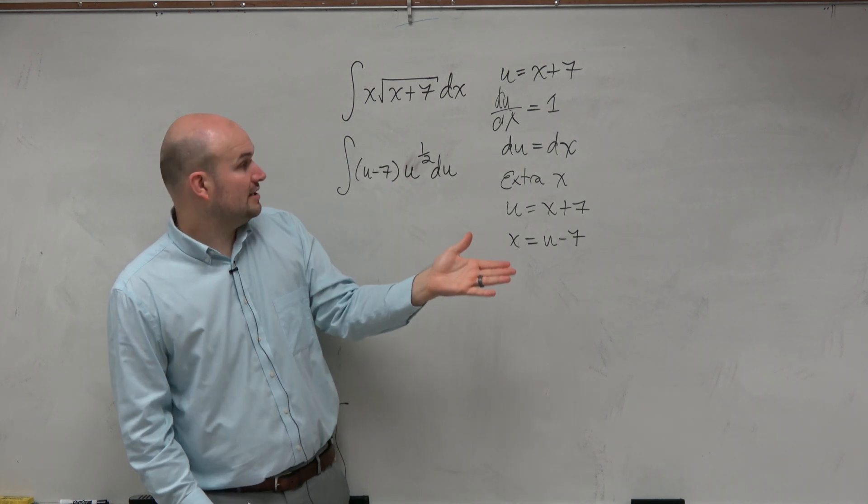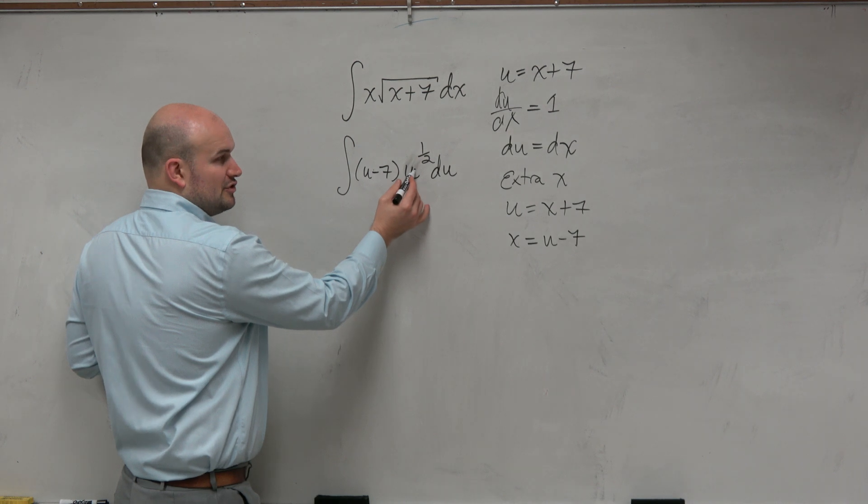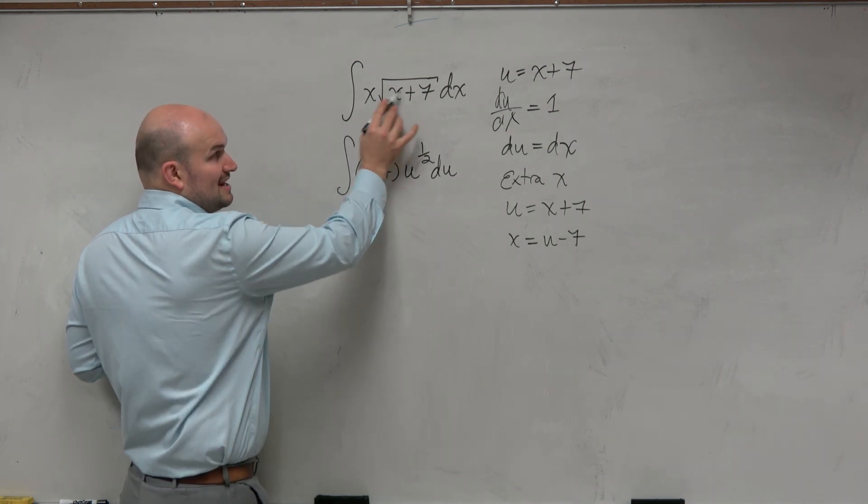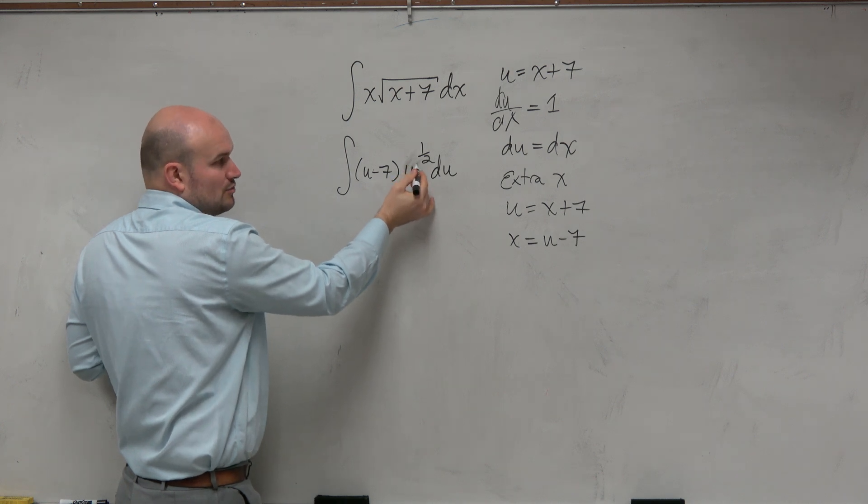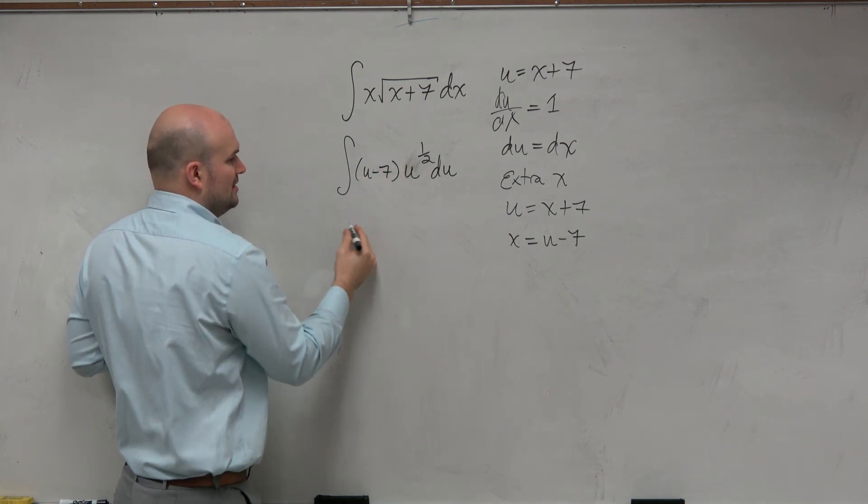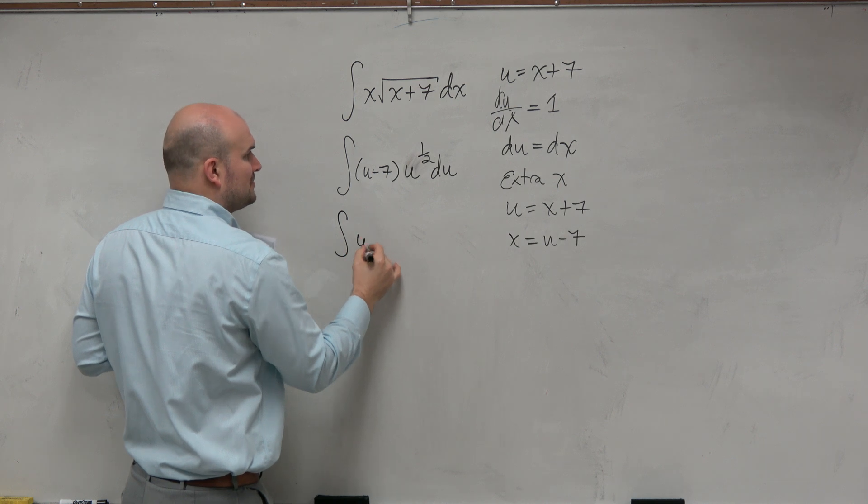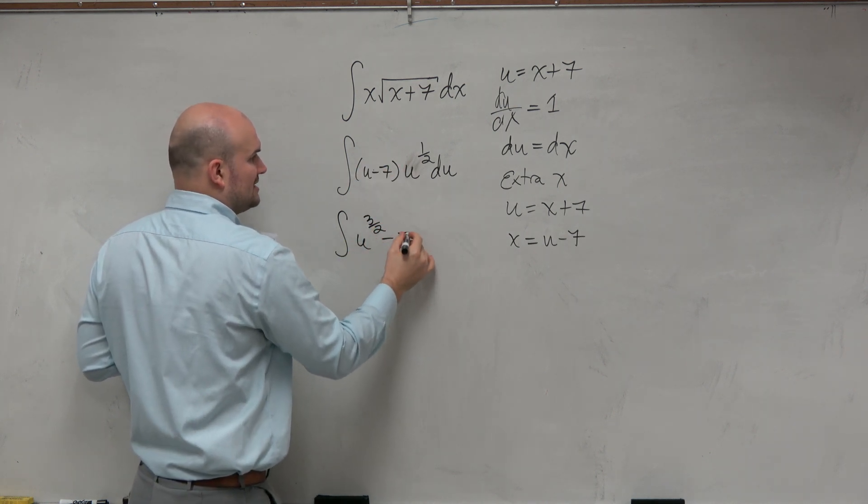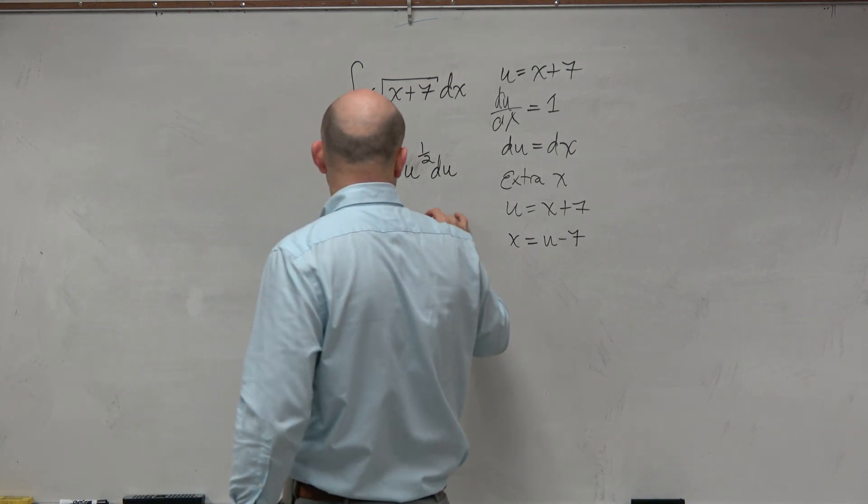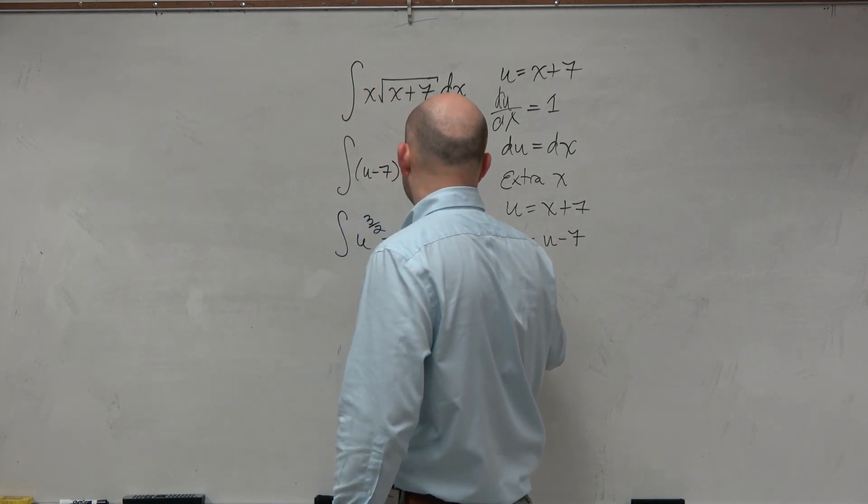Good, now we can just go and integrate. And here, we can distribute this across there. We couldn't distribute the x inside of there because that's the square root, but we can take this square root and distribute inside of here. So when we do that, we have u to the add the power, so that's going to be to the 3 halves minus 7u to the 1 half du.